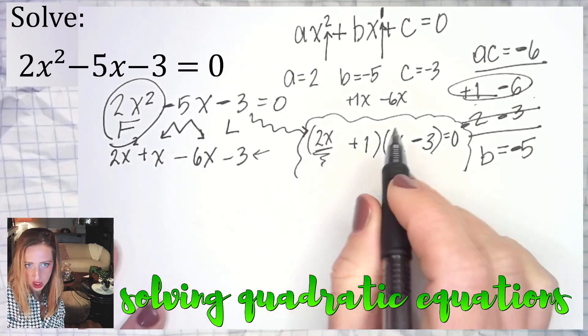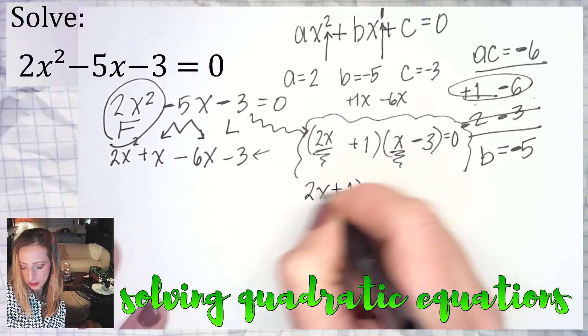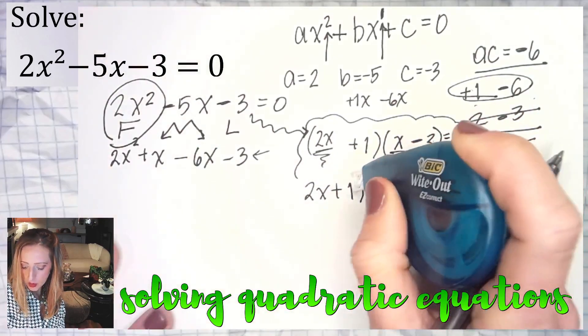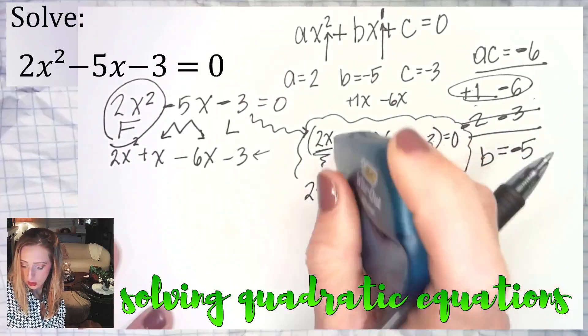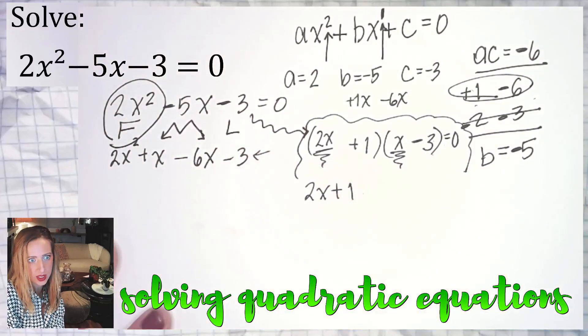Either way, when push comes to shove, it's factored. You have 2x plus one and you have x minus three. Once you have a polynomial equation factored, we go into zero product property, which means we're setting each piece equal to zero.